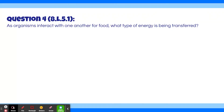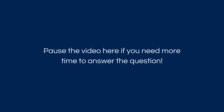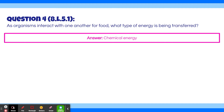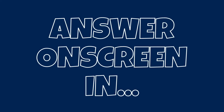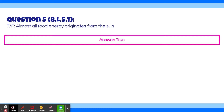Question 4: As organisms interact with one another for food, what type of energy is being transferred? The answer is chemical energy — food has chemical energy. Question 5: True or false — almost all food energy originates from the sun. The answer is true. Plants use the light energy from the sun to produce the chemical energy that is passed between organisms as they interact for food. The light energy is converted into chemical energy; without the light energy, there would be no chemical energy.